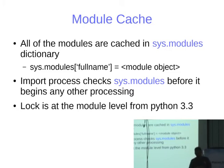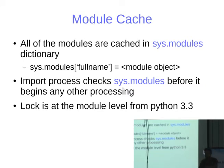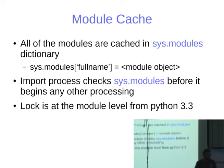One difference between the earlier version and the new version is that locking is now at the module level. Previously, when you imported a module, the lock was at the whole process level. But from 3.3 onwards, the lock is at each individual module level. So if you're importing multiple modules, the lock is per module, not per process. This really only makes a difference if you're running multi-threaded code.